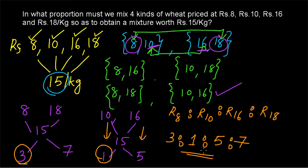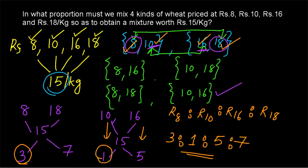To summarize: group the elements into less than mean and greater than mean. Take one element from each group and apply the rule of allegation. Always pair the smallest element with the largest, and the smaller element with the larger — otherwise you will get a wrong answer. Apply the rule of allegation to find the ratio. Thank you for watching.